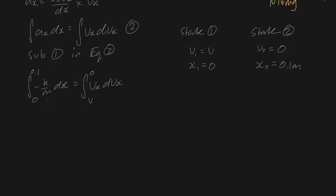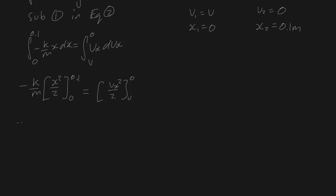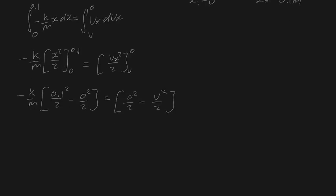Evaluating: minus k/m times (0.1² /2 minus 0²/2) equals 0²/2 minus v²/2. The zero terms drop out, leaving minus k/m times 0.1²/2 equals minus v²/2. Multiplying both sides by minus 2 cancels the halves, giving v² equals 2 times k/m times 0.1 squared.